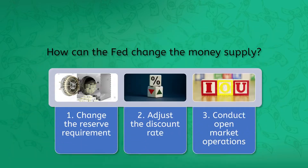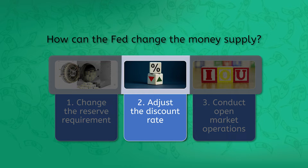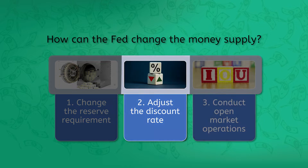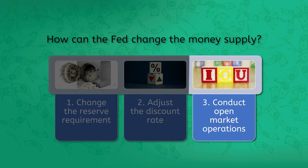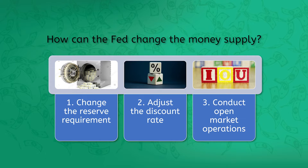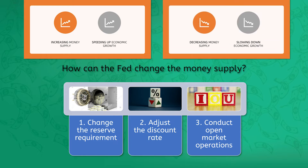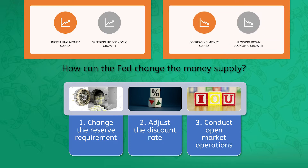There are three main ways the Fed can adjust the money supply in either direction: change the reserve requirement for banks, adjust the discount rate, or conduct open market operations. Each of these tools can be used to increase money supply and stimulate the economy, or to decrease supply and slow things down.